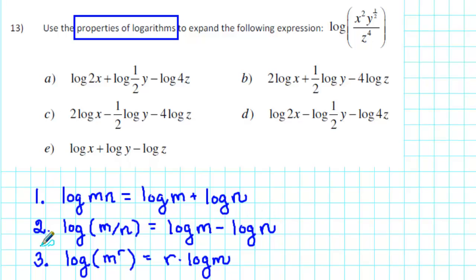The third property of logarithms says that the logarithm of a power is equal to the power times the logarithm of the base.